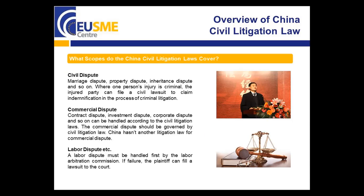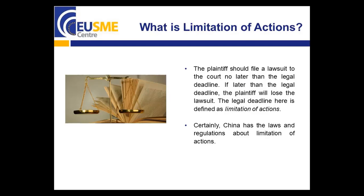Civil disputes include marriage dispute, property dispute, inheritance dispute, and so on. When a person is injured in a criminal matter, the injured party can file a civil lawsuit to claim indemnification in the process of criminal litigation. Commercial disputes include contract dispute, investment dispute, copyright dispute, and so on. Commercial disputes should be governed by civil litigation laws, though China has another litigation law for commercial disputes. A labor dispute must be handled first by the labor arbitration commission; if that fails, the plaintiff can file a lawsuit to the court.